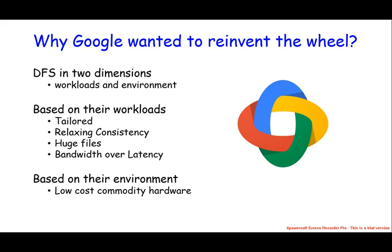Just as you need to align with Oracle's file systems to get maximum performance from an Oracle database — because they know how their workloads behave — Google services like search need to use the file system to get maximum performance. In order to do that, they needed a very specific file system so their workloads could get maximum performance out of it. That is the performance motivation.